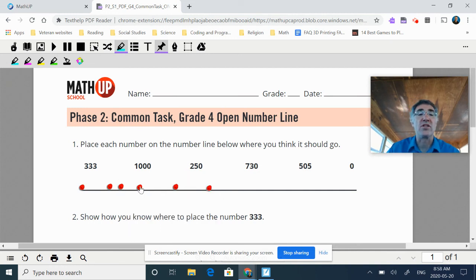And so it's all about this relationship. And that's why this would be considered multiplicative reasoning because as long as I've got my anchor points of zero to a thousand, everything else is going to come off of that. The 505 is in the middle. The 730 is kind of three-fourths. The 250 is one-fourth. And the 333 is at one-third of whatever that value of the number line is. And so that's how I know where to place the 333.